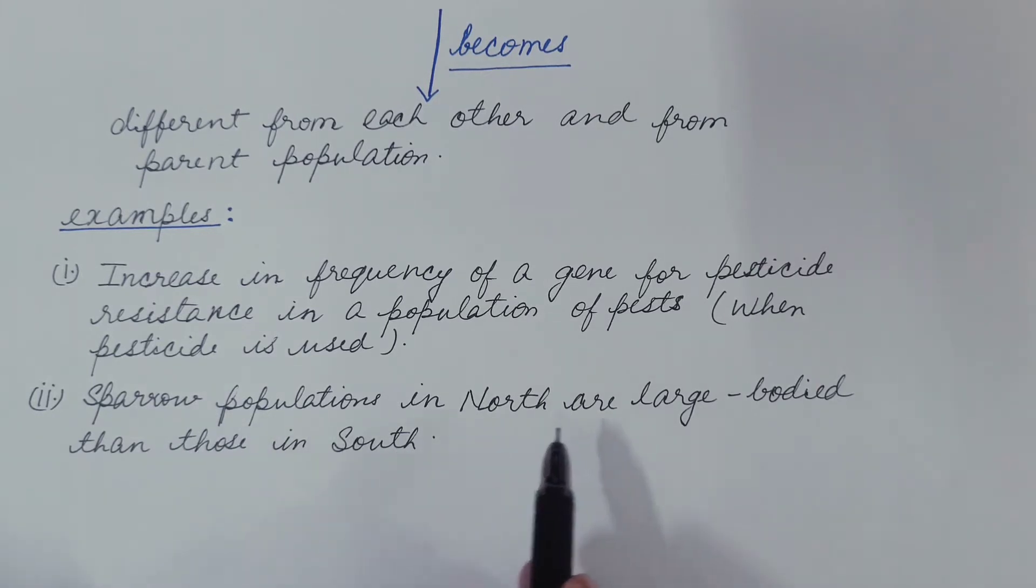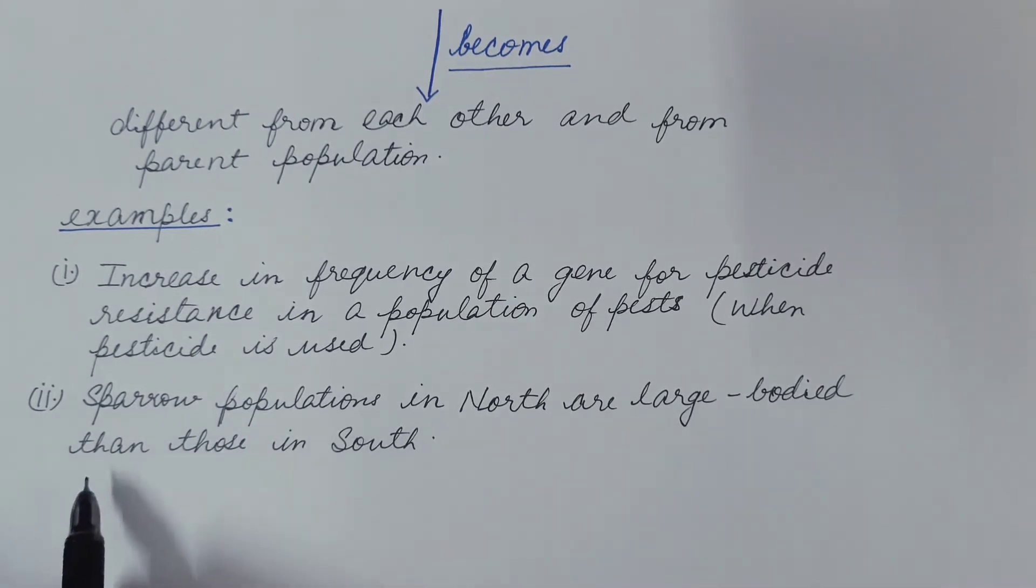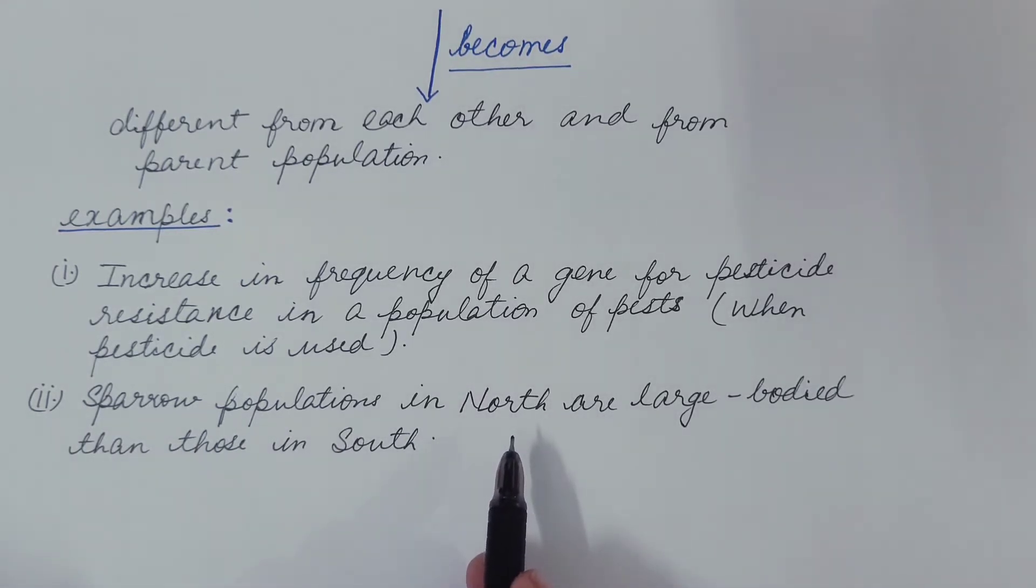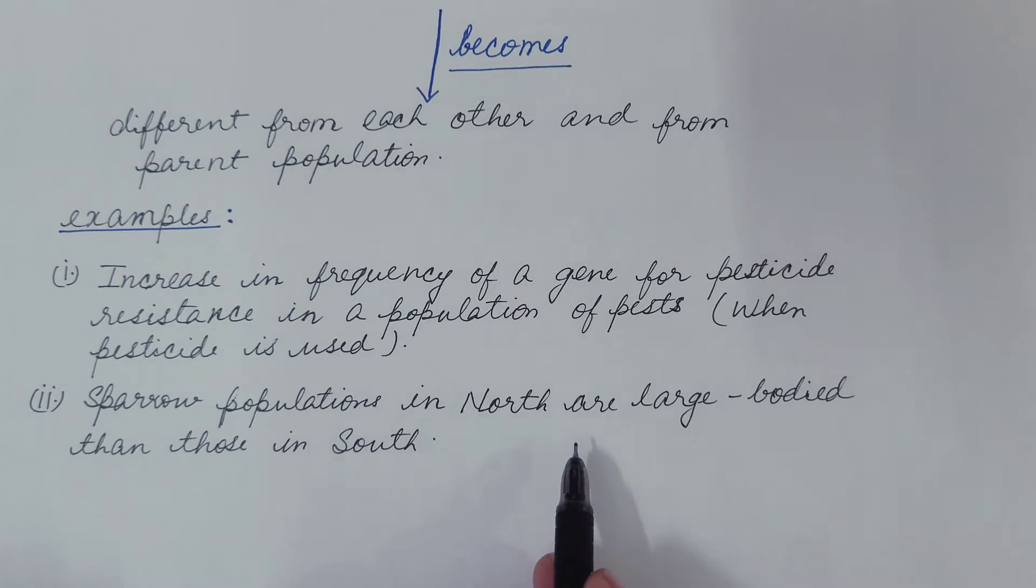So let us see the second example. Sparrow populations in north are larger bodied than those in south. House sparrows were introduced in North America in 1852. These then gradually evolved into different characteristics in different locations.